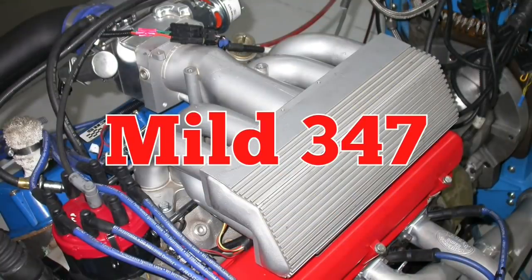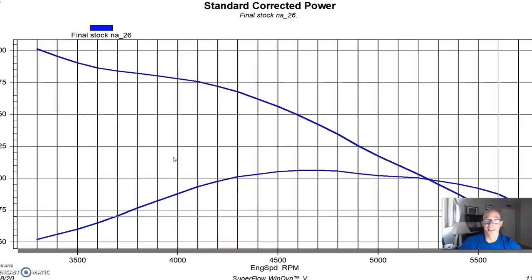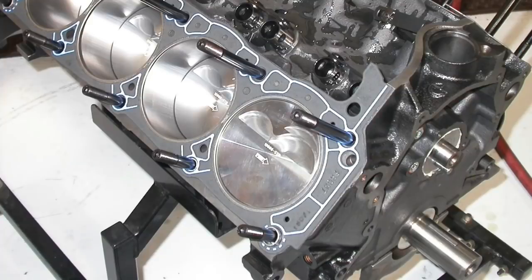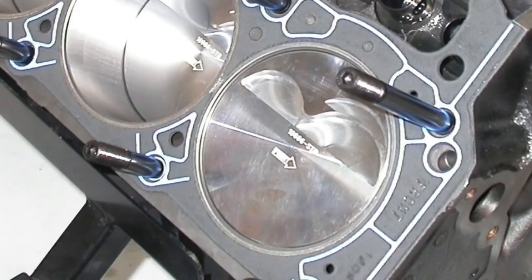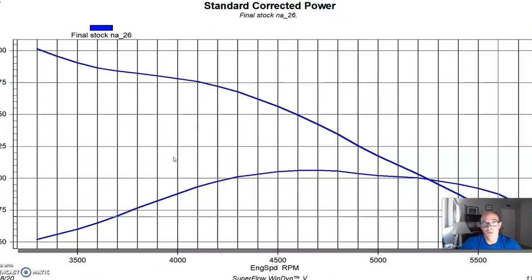To run our comparison between bolt-ons and boost, and then bolt-ons and boost, which we know is probably going to be the best combination, we put together a 347 test motor. Our 347 test motor started out with a production 5L late model hydraulic roller block and we installed a 3.4 inch stroker crank, a set of 5.4 inch forged rods, and a set of forged flat top pistons with valve reliefs to allow us to run enough camshaft on this.